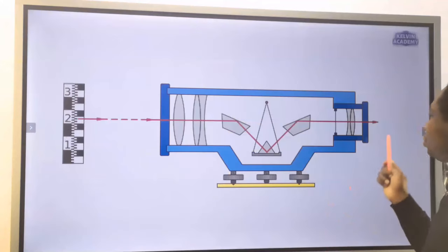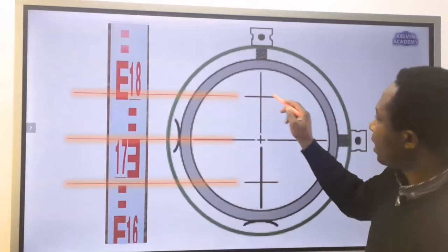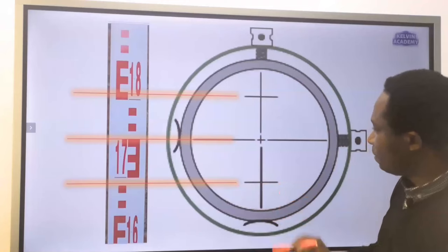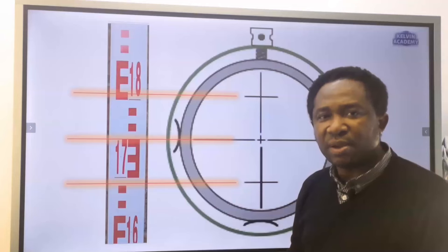Next, look through the lens and let's take the reading for the top hair and for the bottom hair. We are going to take our reading to 3 decimal places.